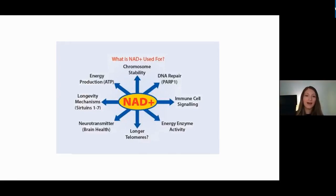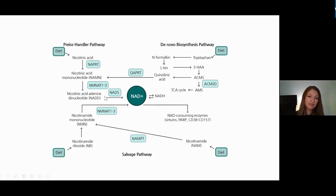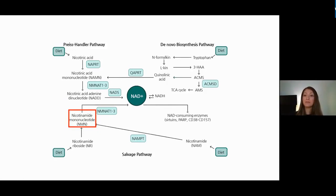There are three ways to synthesize NAD in the body: the Preiss-Handler pathway, the de novo synthesis pathway which is affected by the amino acid tryptophan, and a third pathway where foods containing nicotinamide riboside (NR) are consumed, converted into NMN, which is then converted in one step into NAD.